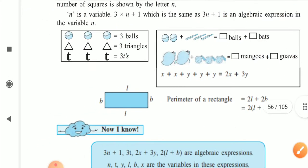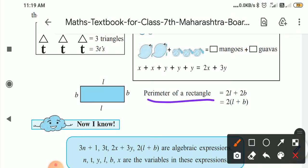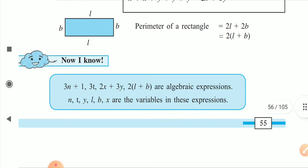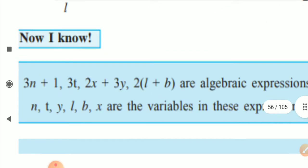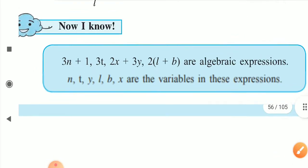One more example: you know the perimeter of a rectangle formula from the fourth standard — perimeter equals two into length plus breadth. So length plus breadth — their measures can be added. These are the algebraic expressions: three n plus one, three t, two x plus three y, and two into bracket l plus b — all of these are algebraic expressions.